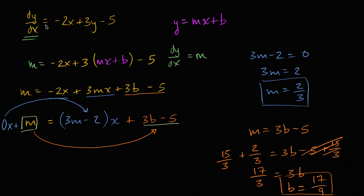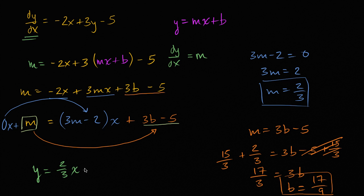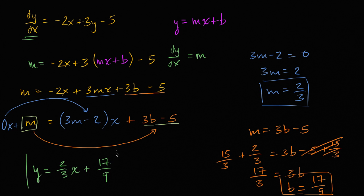And we're done. We just found the particular solution for this differential equation. The solution is y equals two thirds x plus seventeen over nine. I encourage you to verify that this particular solution indeed satisfies this differential equation for all x's.